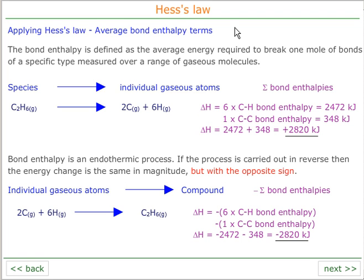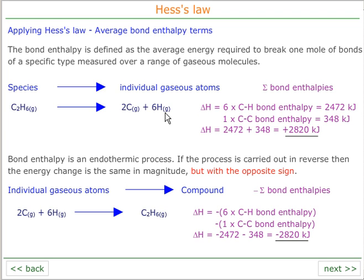If we apply average bond enthalpy terms: bond enthalpy is defined as the average energy required to break one mole of bonds of a specific type, measured over a range of gaseous molecules. If we break a species up into individual gaseous atoms, this is the sum of the bond enthalpies of the bonds within the species. For example, if we take C₂H₆ and break it up into two carbon and six hydrogen atoms, there are six C–H bond enthalpies and one C–C bond enthalpy, giving a total of plus 2820 kilojoules.